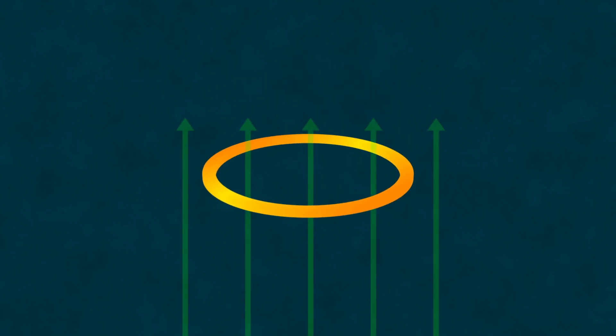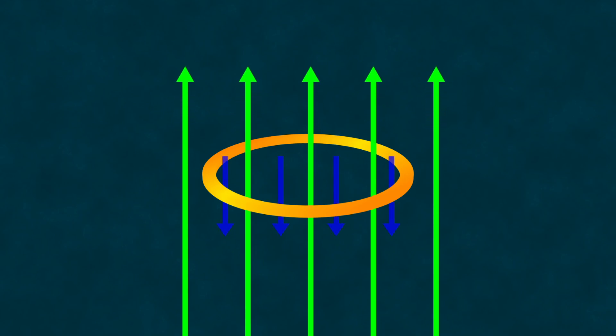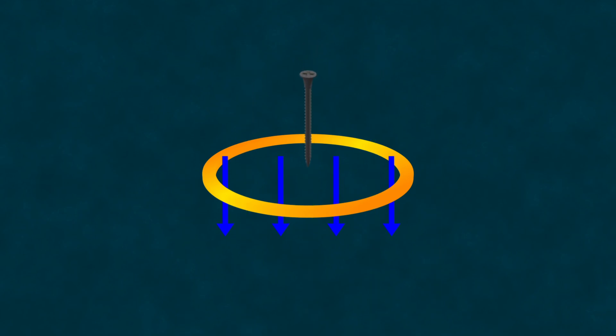If we take a conductor loop and place it in a magnetic field directed, say, upwards, and then increase this field, a magnetic field will be generated in the coil, directed downwards. The direction of the magnetic field and the direction of the current are related by the right-hand rule, meaning that to create this magnetic field, as required by Lenz's Law, the current in the conductor must flow clockwise.